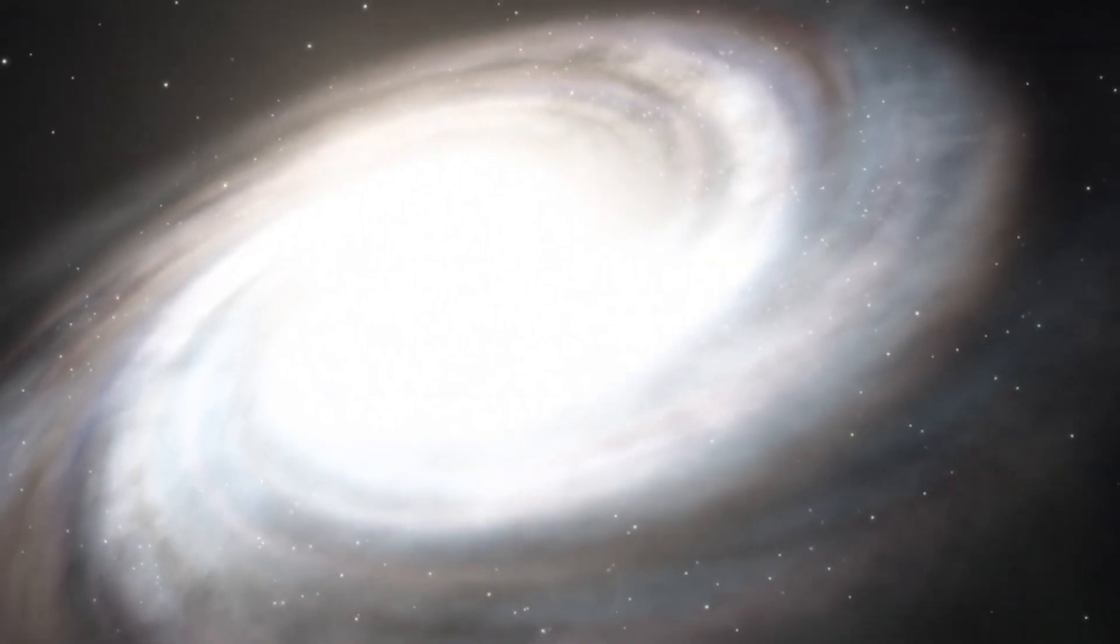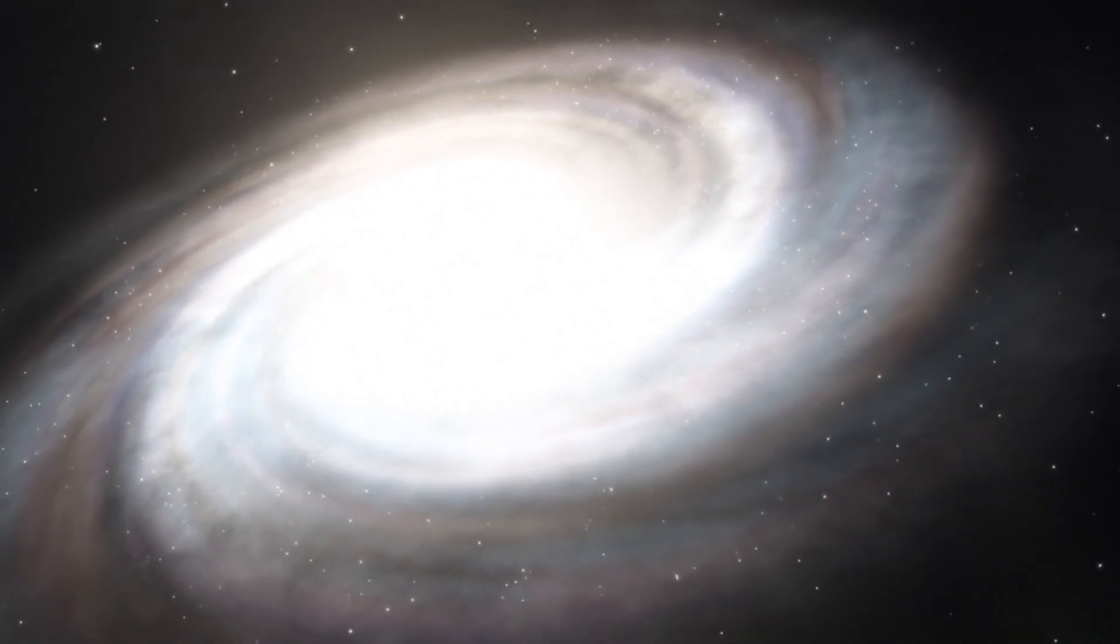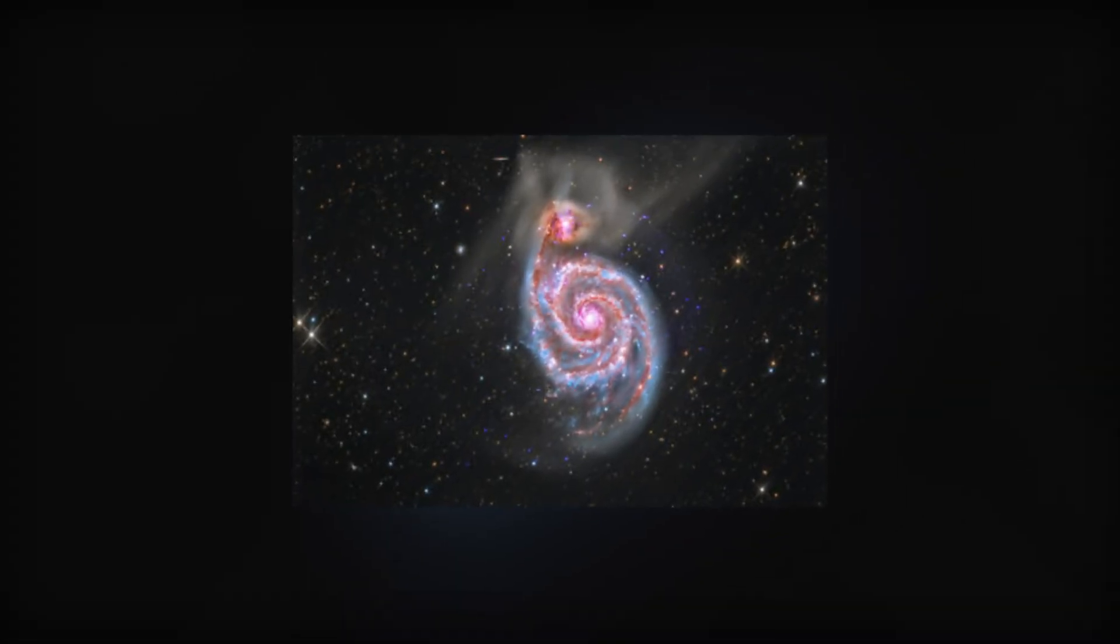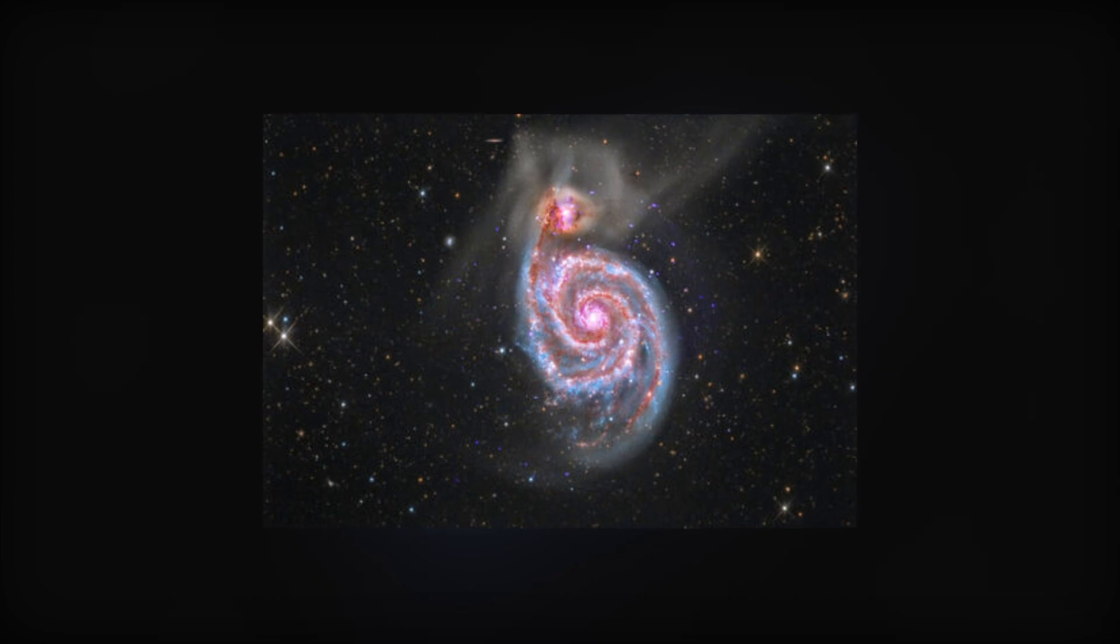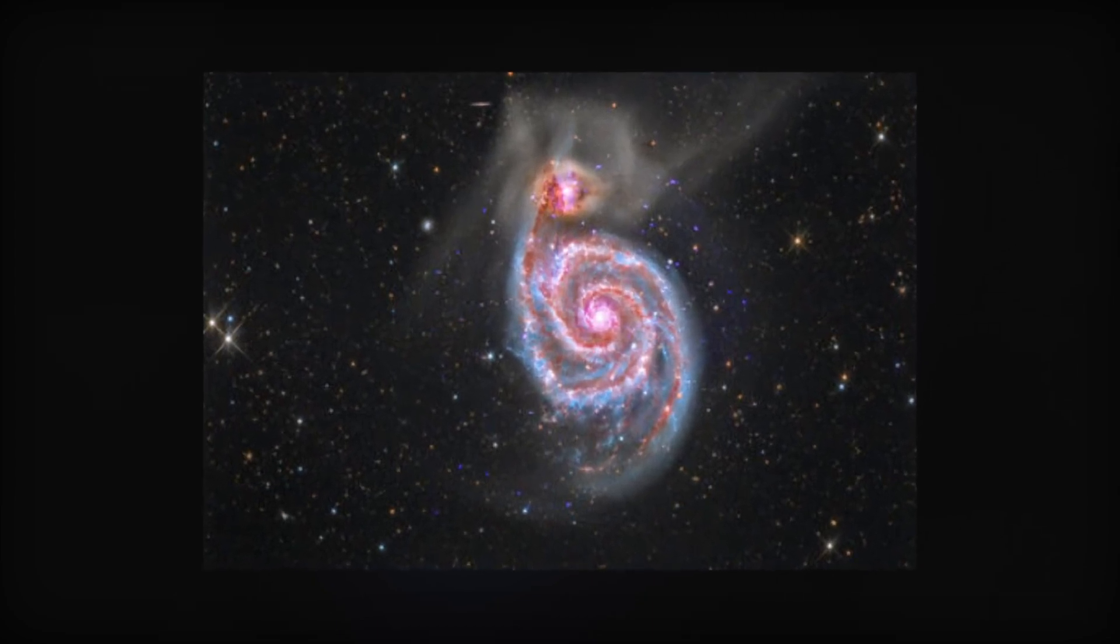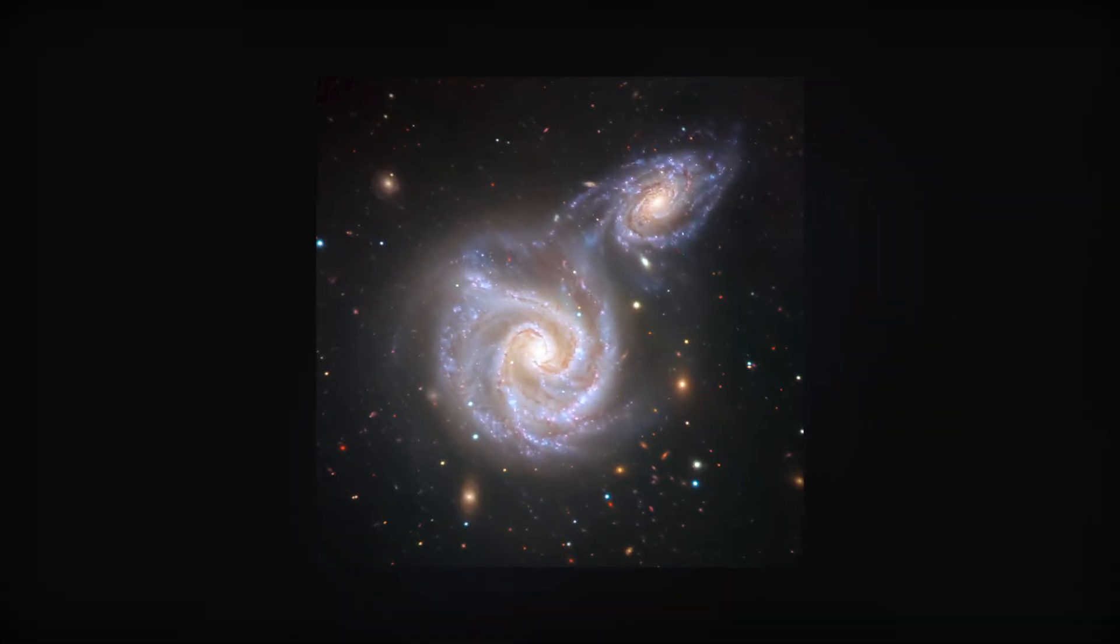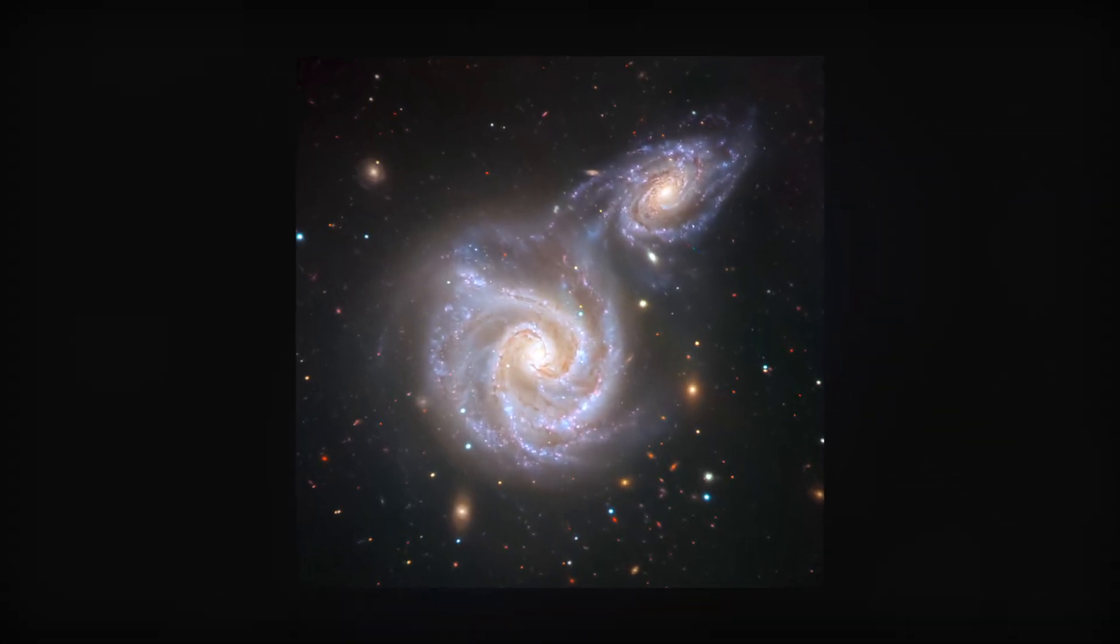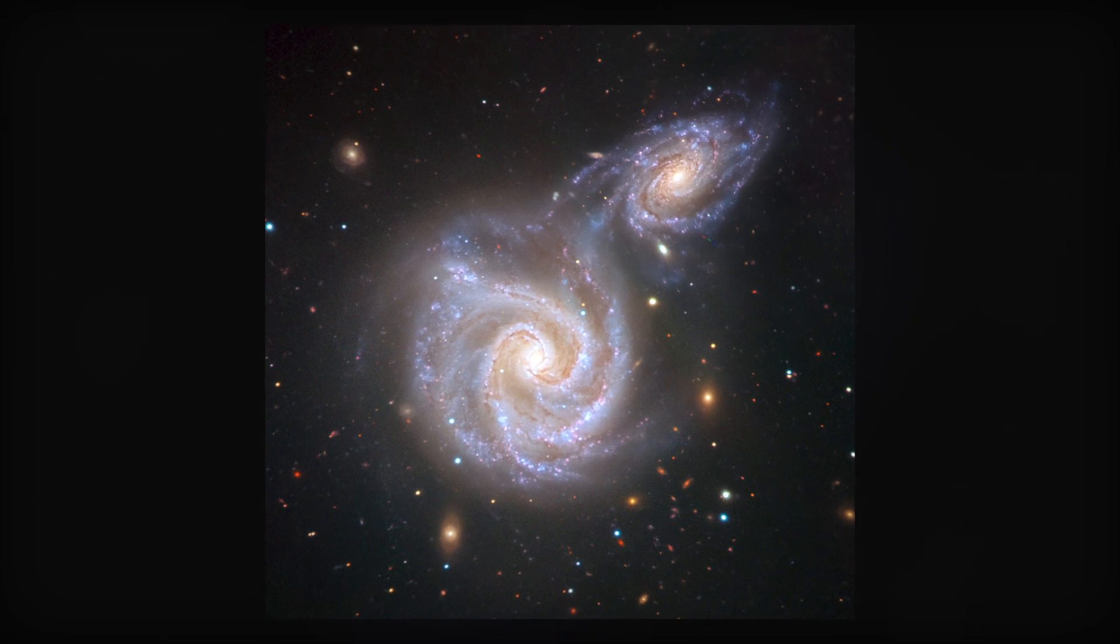When these dwarf galaxies collide and merge, they become enormous galaxies. An expanding disk is created during the merger process, and it is in this disk that new stars are produced. Gravitational influences from passing tiny galaxies cause the disks to take on a spiral shape.